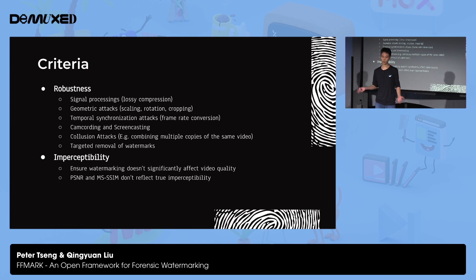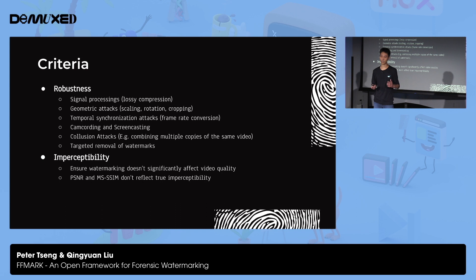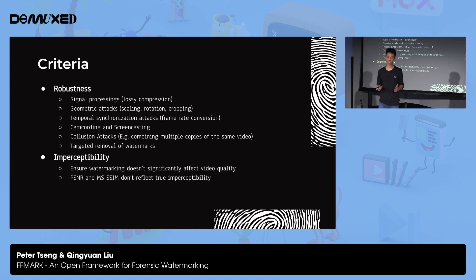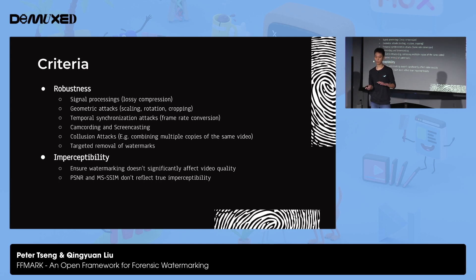We also need robustness against camcording and screencasting — camcording is very, very hard to prevent. And if the pirate is aware of the technique we're using, it's possible to perform a targeted removal of the watermark. We also care about imperceptibility — we have to make sure the watermark doesn't significantly affect video quality. For evaluation, metrics like PSNR and MS-SSIM don't reflect the true imperceptibility in the human visual system, so it's generally recommended to perform a subjective test with a real audience.